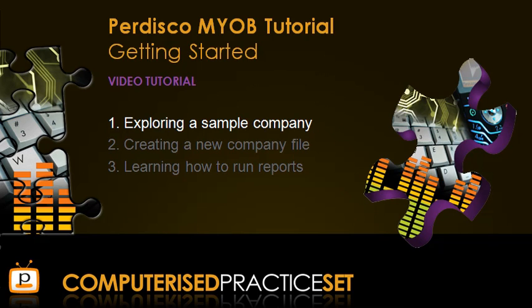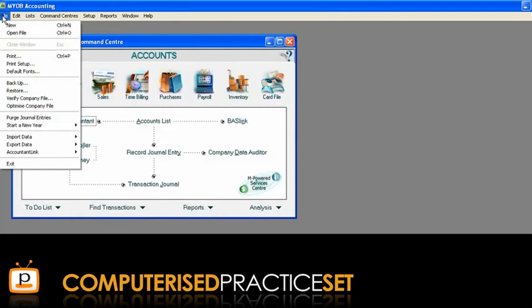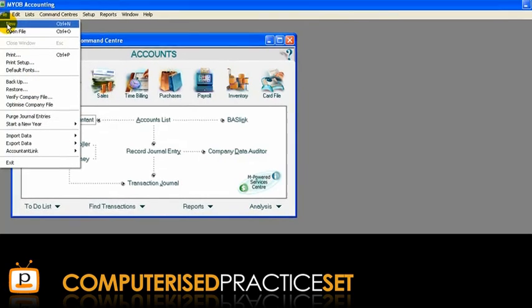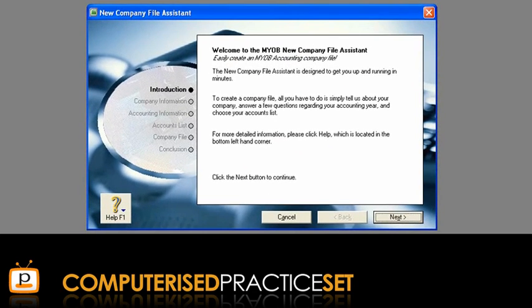So now that we have explored MYOB a little, we can move on to the next step — creating a new company file. From the File menu, select New to open the New Company File Assistant, where you will simply answer the questions to create your company file.